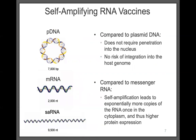Our specific type of nucleic acid vaccine is self-amplifying RNA. There are three types of nucleic acids we use: plasmid DNA, which is double-stranded, circular, and around 7,000 base pairs; messenger RNA, which is single-stranded, linear, and around 2,000 nucleotides; and self-amplifying RNA, which is much longer, single-stranded, and around 9,500 nucleotides. Self-amplifying RNA doesn't require penetration into the nucleus, making it easier to deliver, and there's no risk of integration into the host genome. Compared to mRNA, the self-amplification properties lead to exponentially more RNA copies in the cytoplasm and higher protein expression.